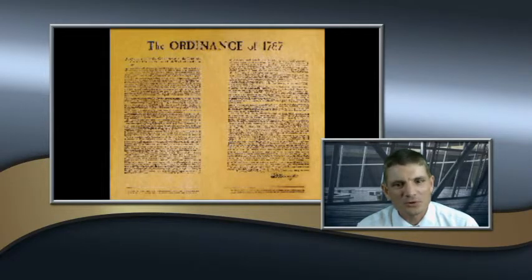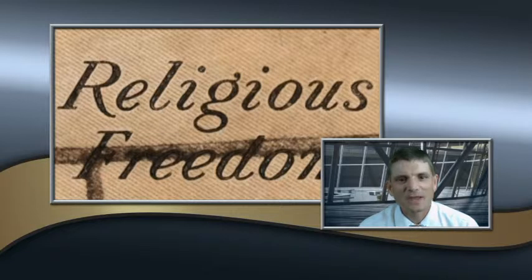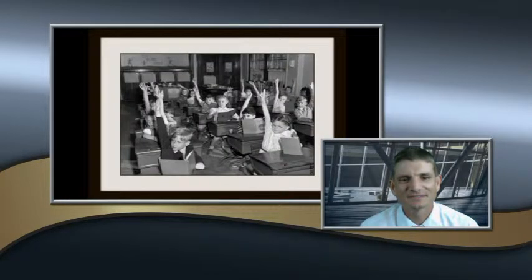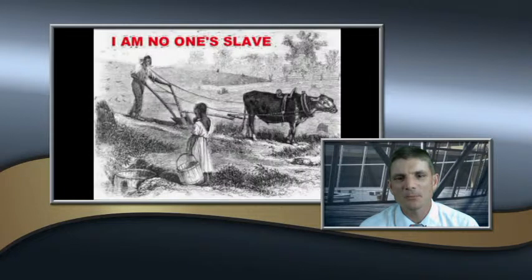The Northwest Ordinance guaranteed rights to the people, such as freedom of religion and the right to a trial by jury. Education would be encouraged and Indians would be treated in good faith. The Northwest Ordinance also banned slavery in the Northwest Territory.